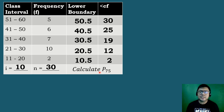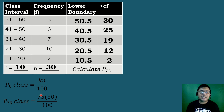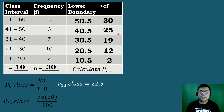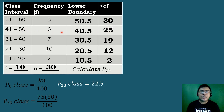Let's have our last example. This time, let's compute for Percentile 75. We look for the percentile class by substituting k equal to 75 and n equal to 30 all over 100. So 75 times 30 divided by 100 is equal to 22.5. Looking at the less than cumulative frequency, the value greater than or equal to 22.5 is 25. So the percentile class is located on the fourth class.